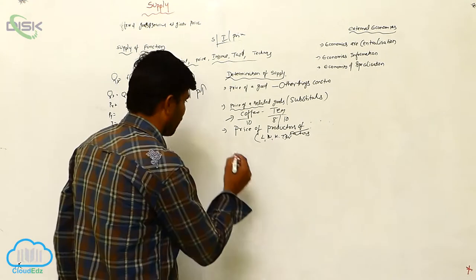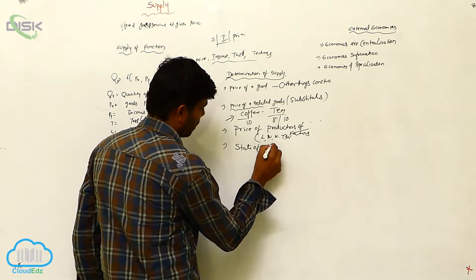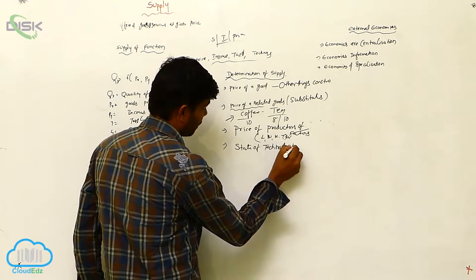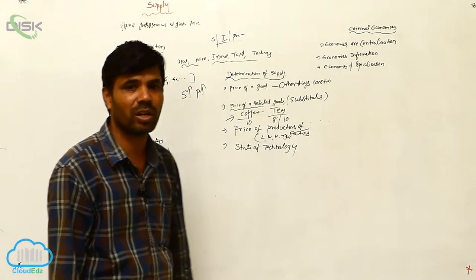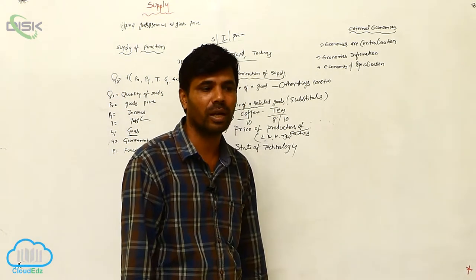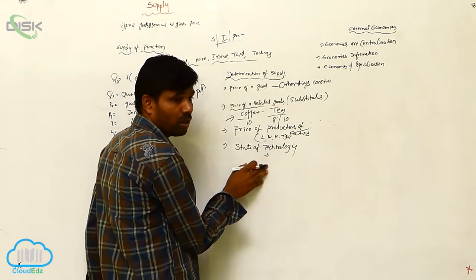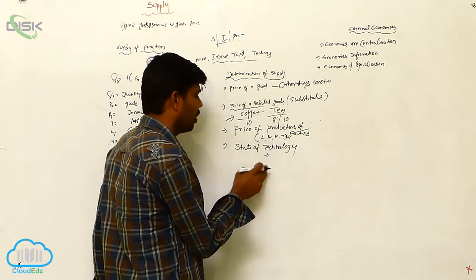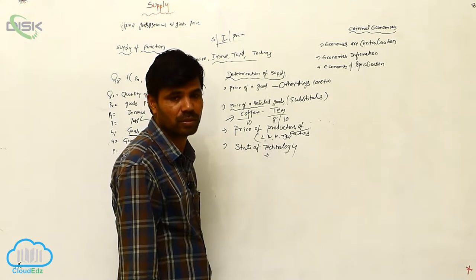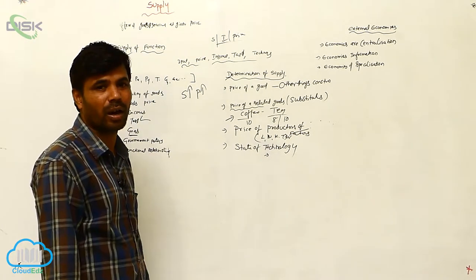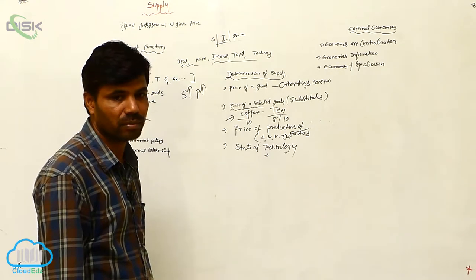Next is the state of technology. Technology also plays a main role. Nowadays, manufacturers and everybody are using technology, because without technology we can't run a business and we can't make products properly. So technology also influences the supply of goods and helps commodities reach the market.